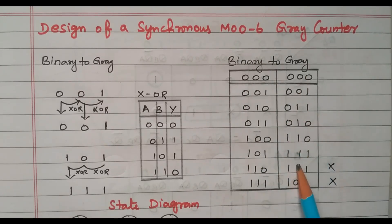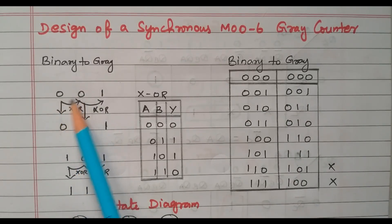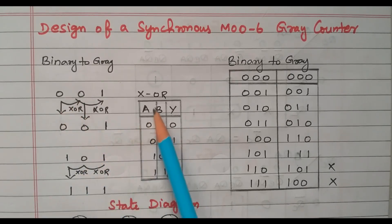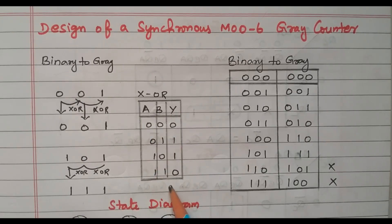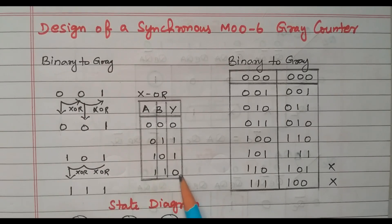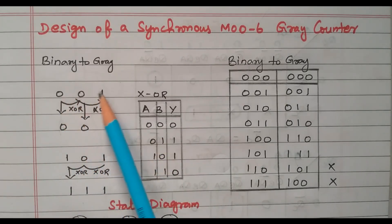This binary number should be converted into gray code. For 001, the first bit is written as-is. The second gray bit is the XOR of the first and second binary bits. The XOR gate: inputs 0,0 give 0; 0,1 give 1; 1,0 give 1; 1,1 give 0. Both inputs same means output 0; both different means output 1.